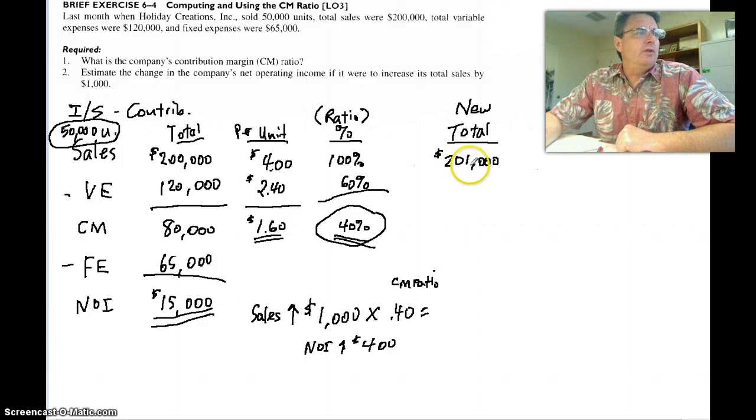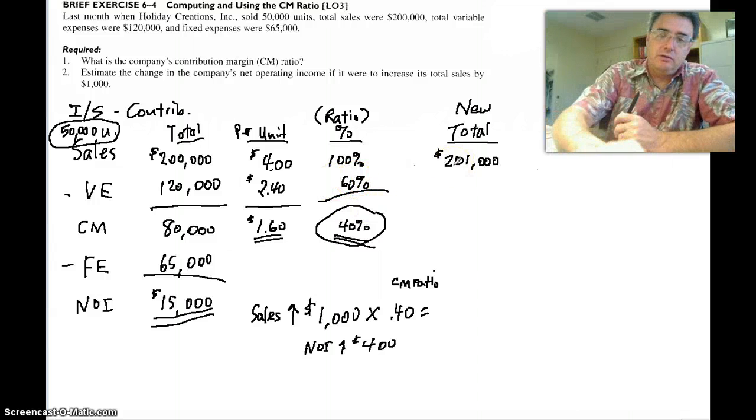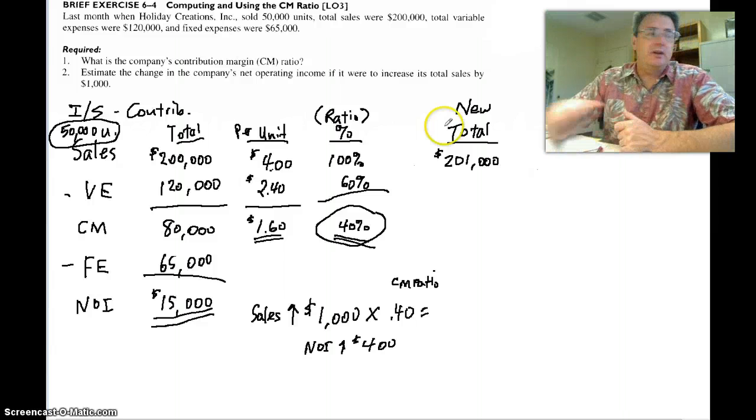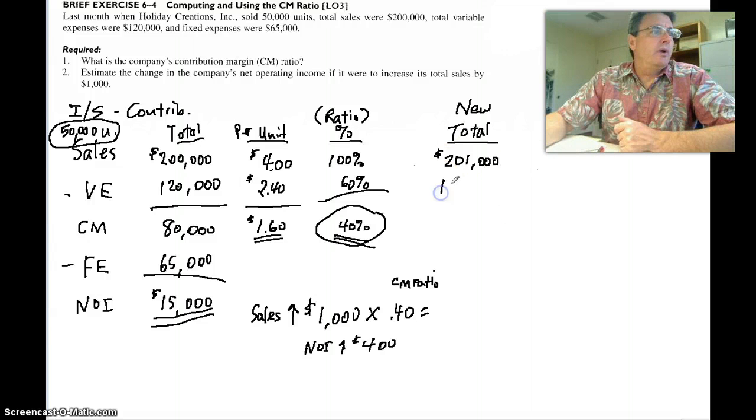Now let's prove it by finishing our contribution margin income statement. So if our total sales are going to be $201,000 now, what are our variable expenses going to be? Right here. They're always going to be 60% of our sales.